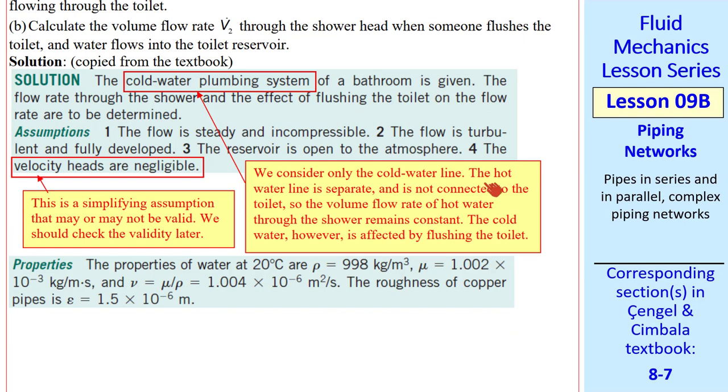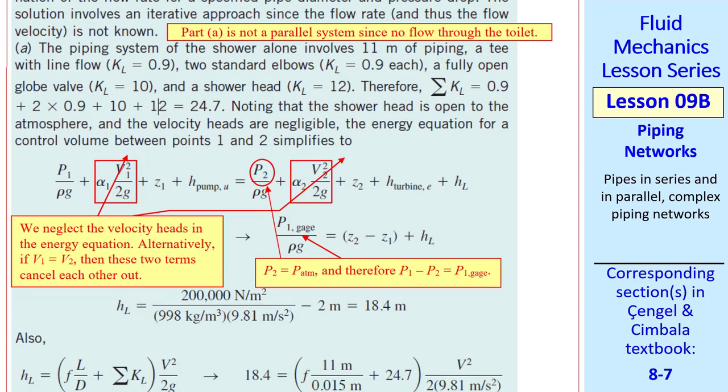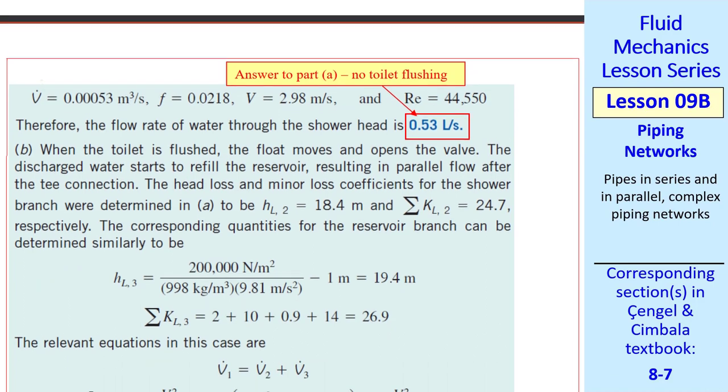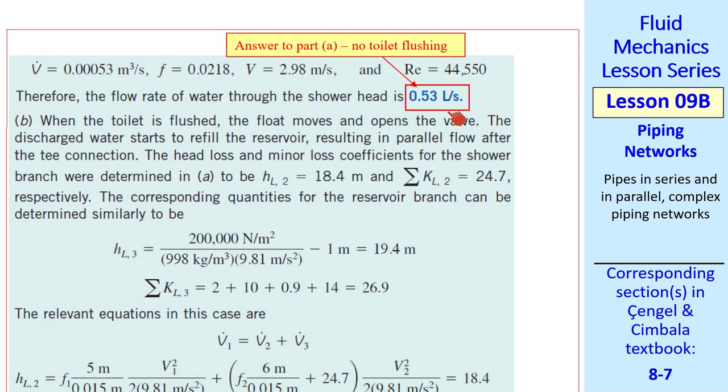I'm not going to go over this in detail, just point out some things. We consider only the cold water line, since the hot water line is separate, and there's no connection of the hot water to the toilet. The shower gets hotter when someone flushes, because part of the cold water is deflected into the toilet. Part A is fairly simple, same as previous problems. And I point out that in addition four of the Cengel-Cimbala textbook, we used the Colebrook equation, which is an older equation to mimic the Moody chart. We now use the Churchill equation, and we used Ease to calculate the answers. We get 0.53 liters per second when there's no toilet flushing.